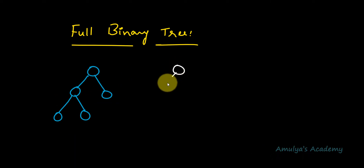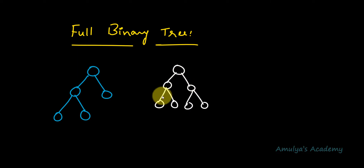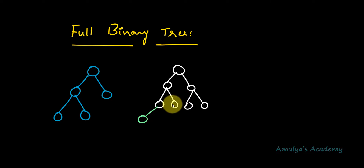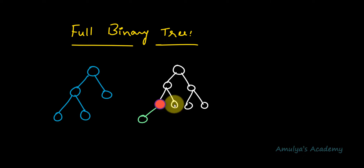Let's take another example. This is also a binary tree where every node contains 2 children. The root, this node, and this node each contain 2 children, and the leaf nodes contain 0 children — so this is also a full binary tree. Now if I add a node with only 1 child here, it is still a binary tree but it is not a full binary tree, because a node has only 1 child.